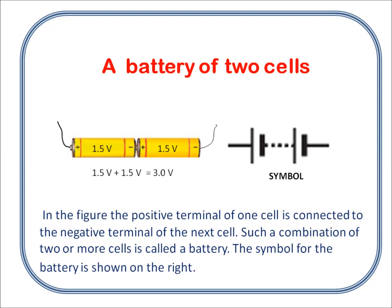In the figure, the positive terminal of one cell is connected to the negative terminal of the next cell. Such a combination of two or more cells is called a battery. The symbol for the battery is shown on the right.